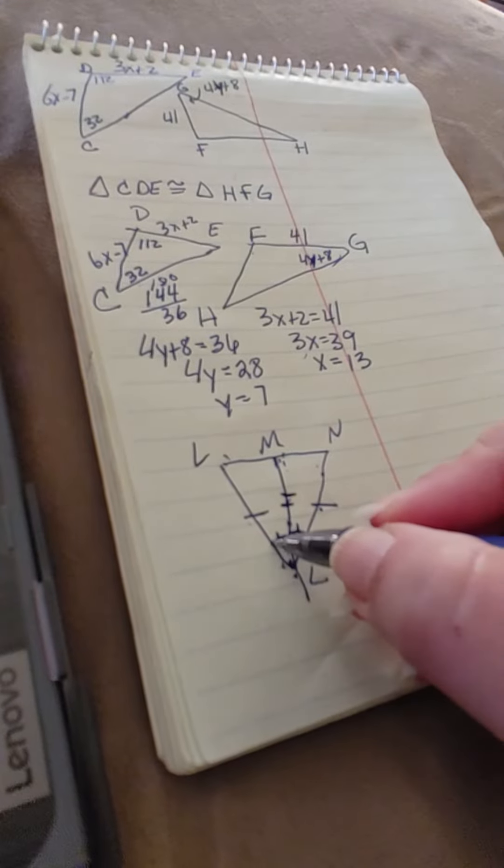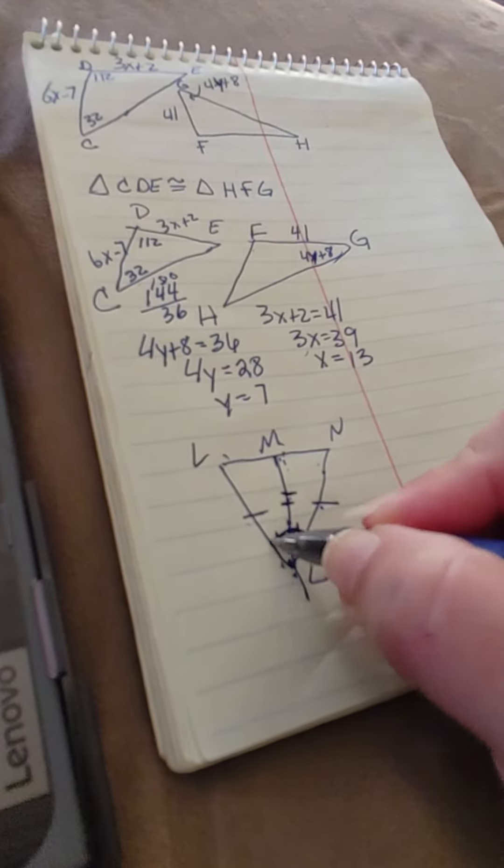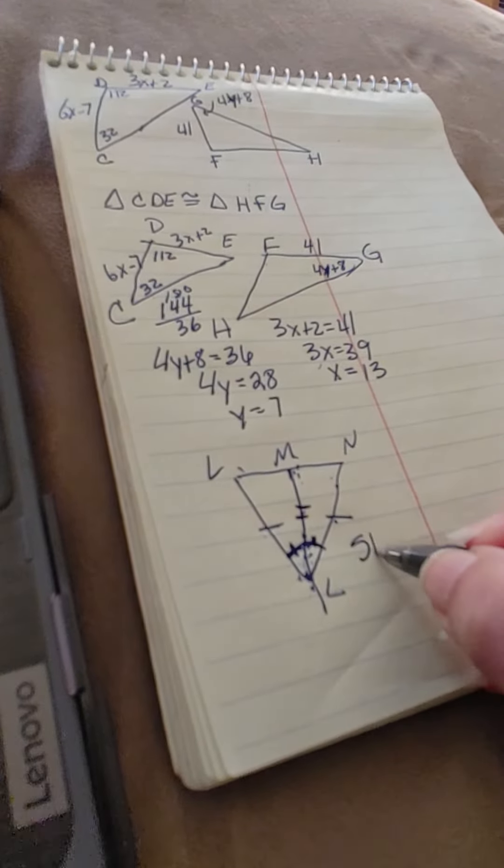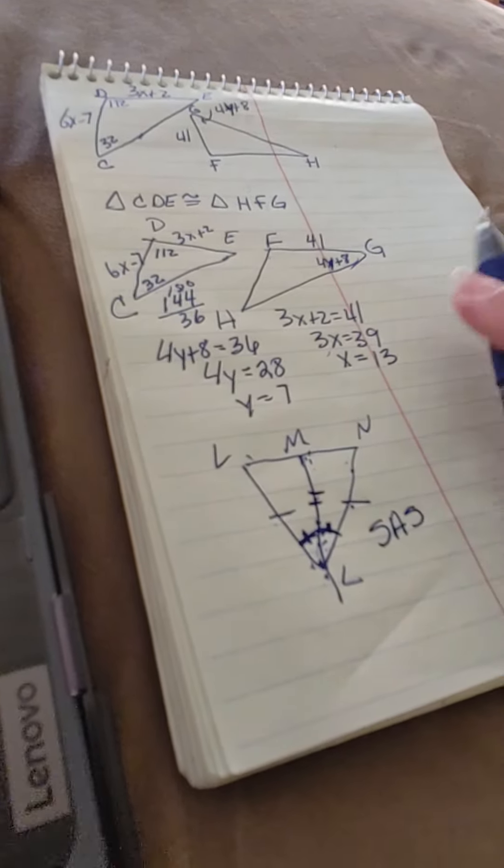If it bisects, that means it cuts the big angle in half, which means the two smaller angles would be the same. That would make it side, angle, side.